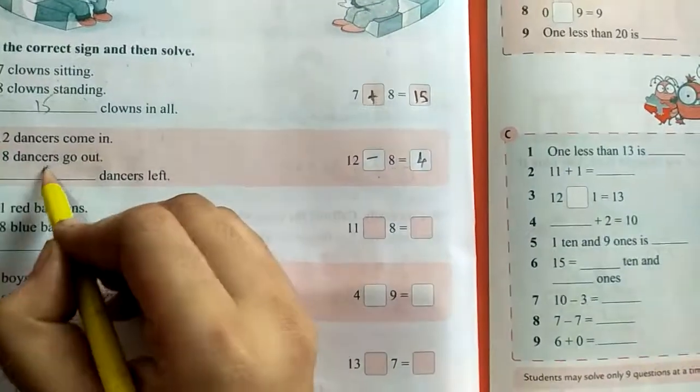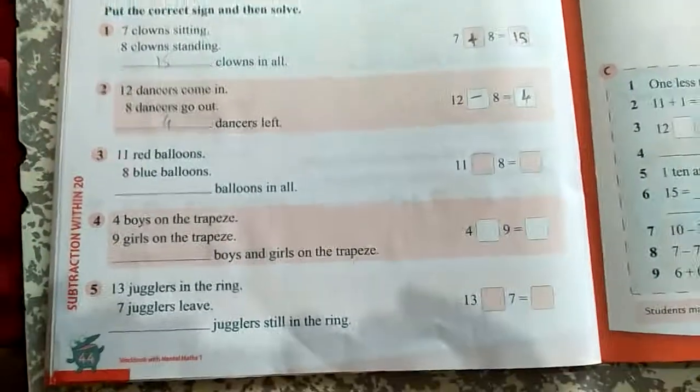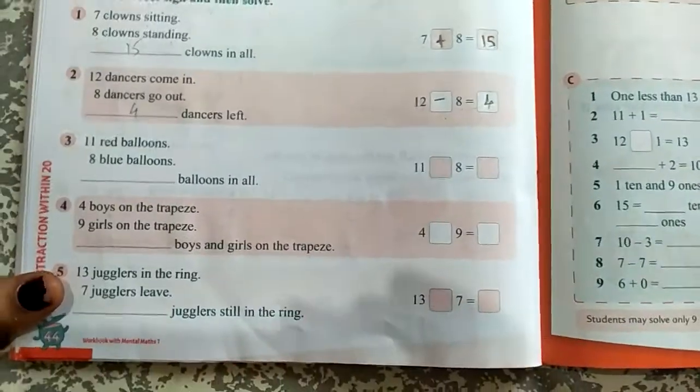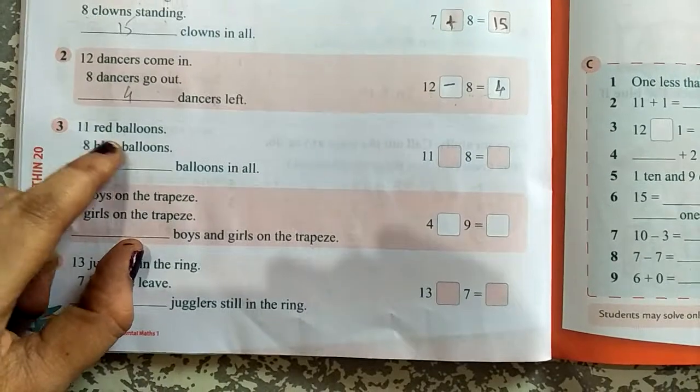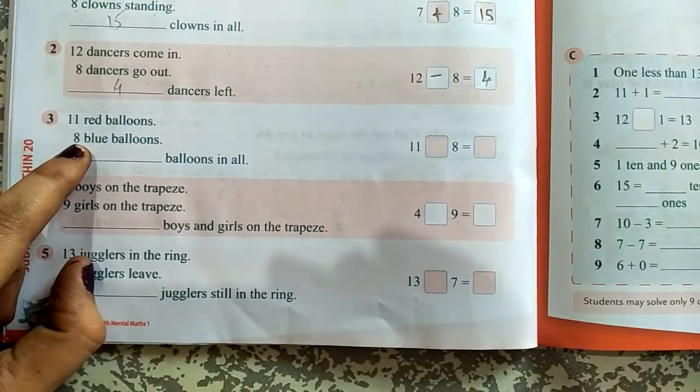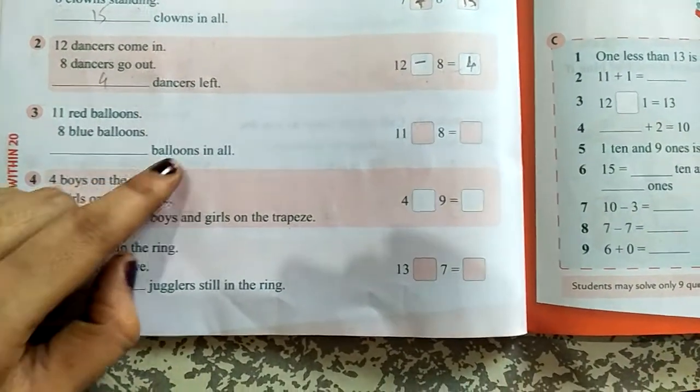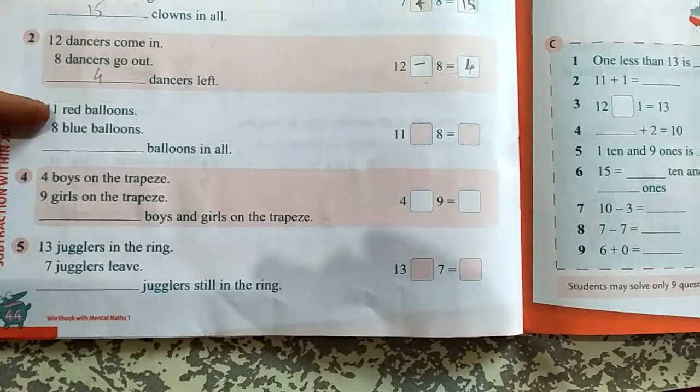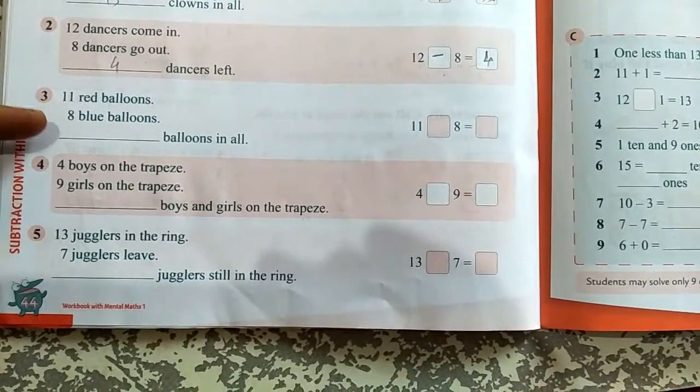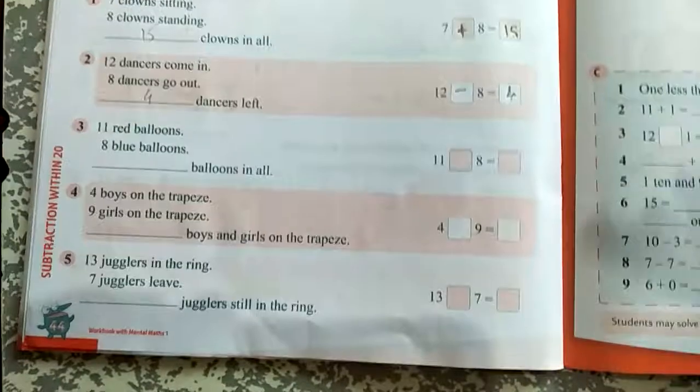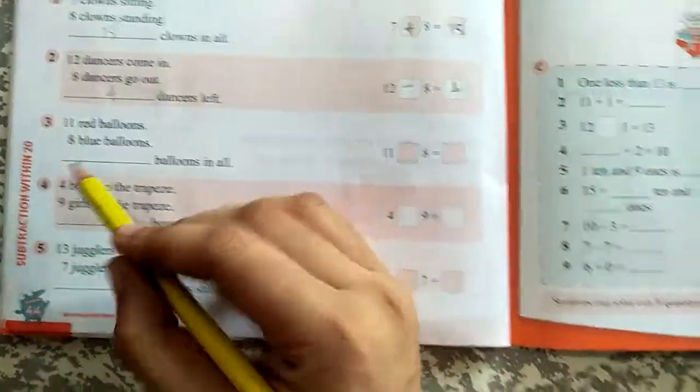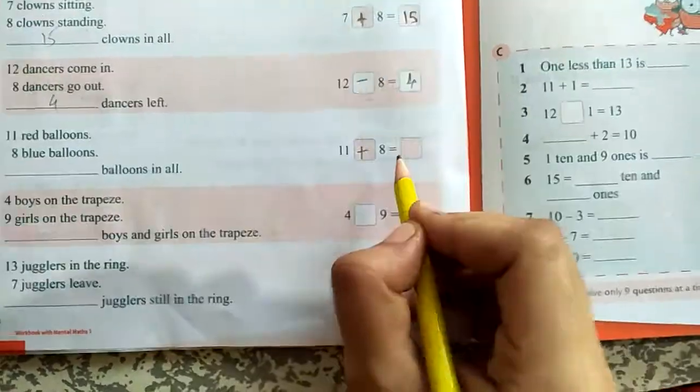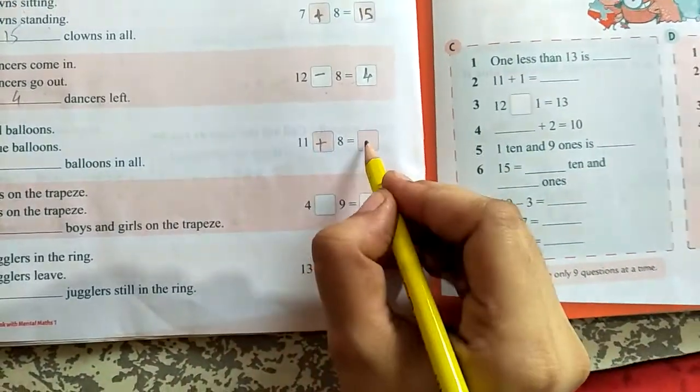11 red balloons, 8 blue balloons, dash balloons in all. Red balloon how many? 11. Blue? 8. So 11 and 8, total how many balloons? So 11 plus 8, how many balloons? 19.